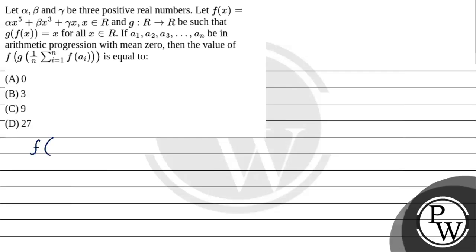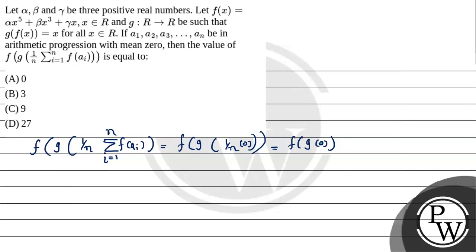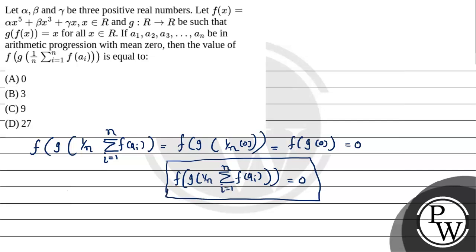Now we can write f(g(1/n · Σᵢ₌₁ⁿ f(aᵢ))) = f(g(1/n · 0)) = f(g(0)). Since f(g(x)) = x for all x, putting x = 0 gives f(g(0)) = 0. Therefore the value of f(g(1/n · Σᵢ₌₁ⁿ f(aᵢ))) = 0. Option A is the correct answer and the final answer is 0.